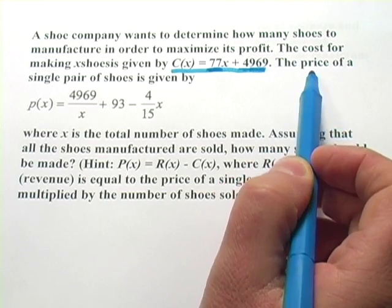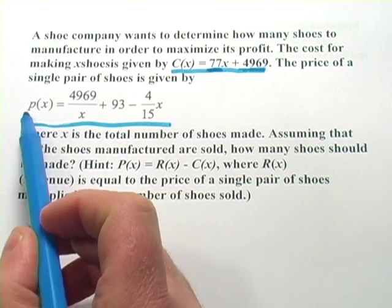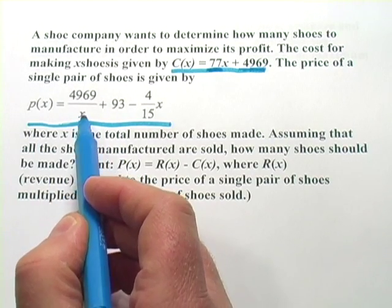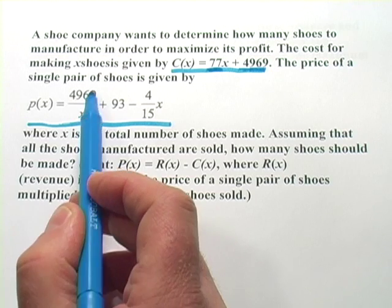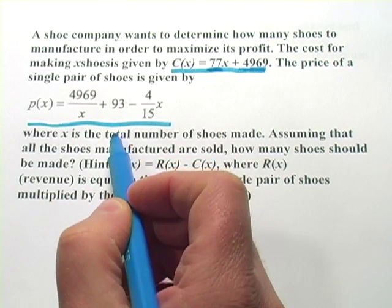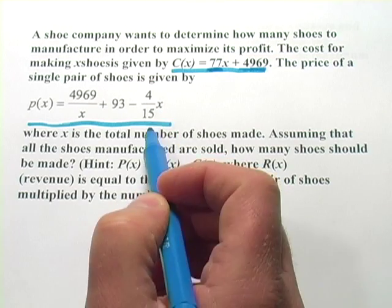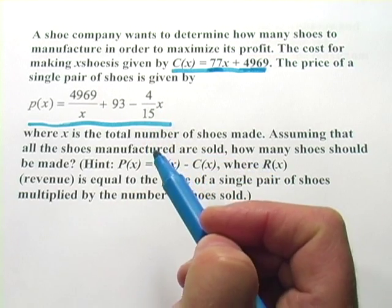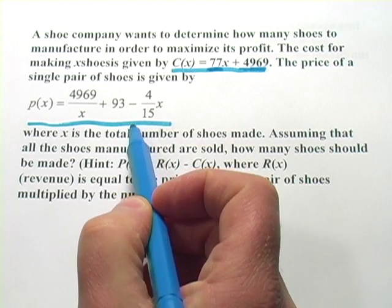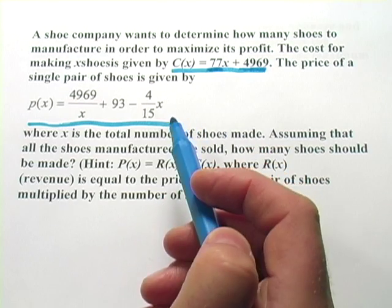And then it says the price of a single pair of shoes is given by this function. The price is those fixed costs divided by the number of shoes. So the more shoes you make the more you get to divide this fixed cost that you put out in the first place. Plus 93 minus 4 fifteenths x. So that will give you the price of a pair of shoes. That's how much they can charge for them. So the price is going to depend on how many shoes you make and the cost is going to depend on how many shoes you make.